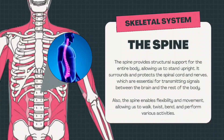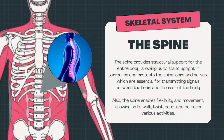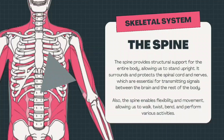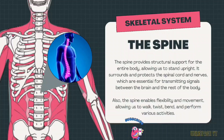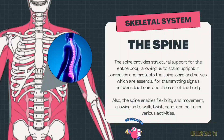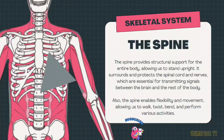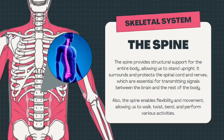The spine provides structural support for the entire body, allowing us to stand upright. It surrounds and protects the spinal cord and nerves, which are essential for transmitting signals between the brain and the rest of the body. Also, the spine enables flexibility and movement, allowing us to walk, twist, bend, and perform various activities.